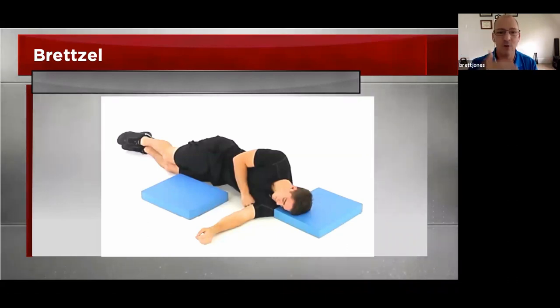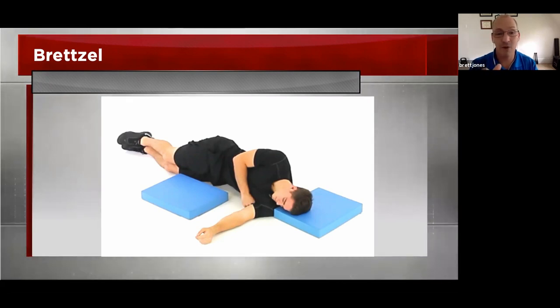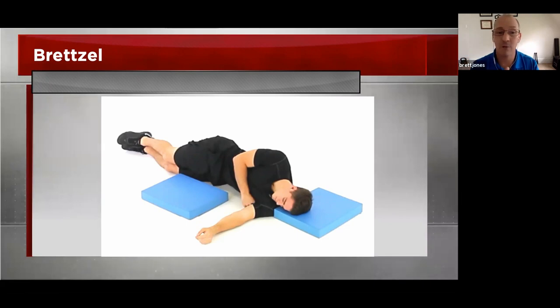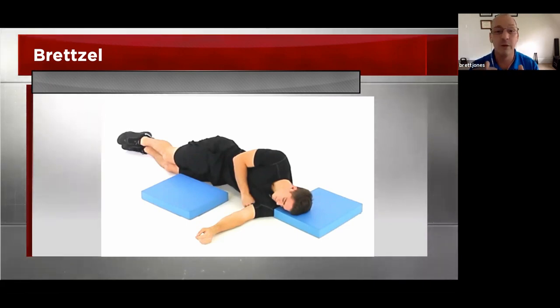The setup is key: stacked at the ribs, stacked at the hips, neutral neck. Make sure that if you're grabbing that bottom foot, you're not having to side bend to reach it. You may have to bring a strap into play to make sure that you can be nice and neutral before you begin your rotation — you may have a shorter arm or a longer leg and need that strap to maintain neutral spine.